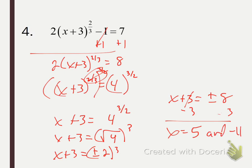Plus or minus 2 to the third power is plus or minus 8. Be careful: don't just say x is plus or minus 5 — we've got to subtract 3 from each case separately. Positive 8 minus 3 is 5, and negative 8 minus 3 is negative 11. So our two solutions are x equals 5 and x equals negative 11. Quick check: 5 plus 3 is 8, cube root of 8 is 2, 2 squared is 4, 4 times 2 is 8, 8 minus 1 is 7 — works. For negative 11: negative 11 plus 3 is negative 8, cube root of negative 8 is negative 2, square that gives 4, 4 times 2 is 8, 8 minus 1 is 7 — both solutions work.